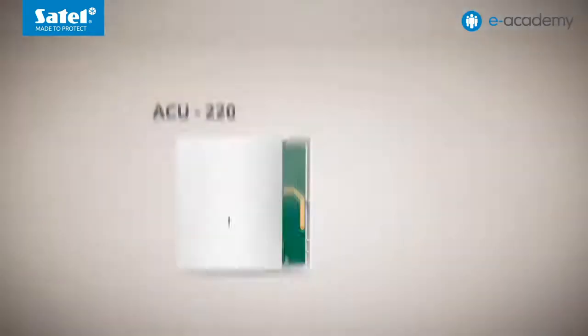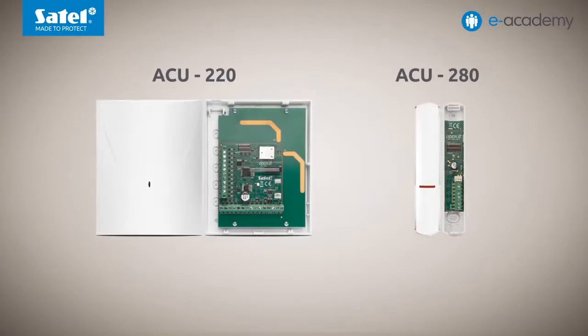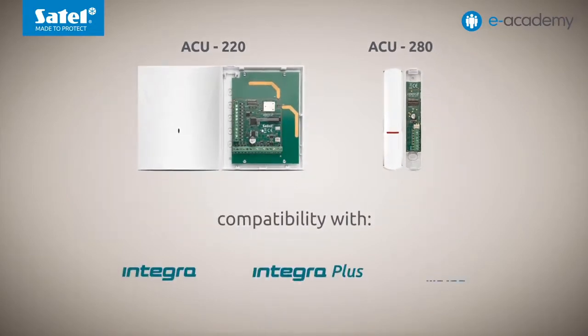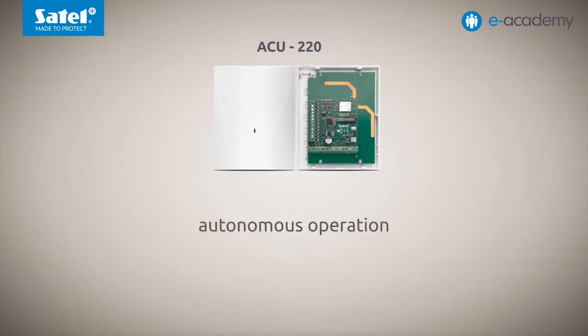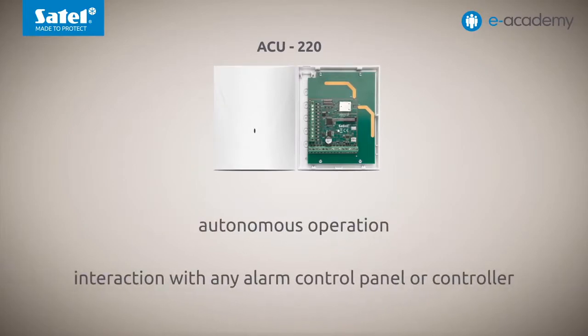Now let's discuss areas of application of the new wireless system. We will discuss the individual devices, starting with the most important items which are the ABACS 2 controllers, ACU220 and ACU280. Both modules can be used to build new wireless alarm systems or to expand existing systems based on the Integra, Integra Plus and Versa alarm control panels. The controllers are connected to the communication bus as expanders of wireless devices. The ACU220 controller can work in the standalone mode and also allows expansion of any alarm or automation system by adding ABACS 2 wireless devices.